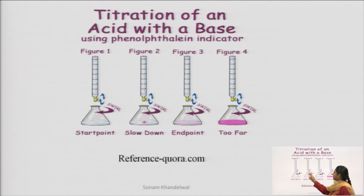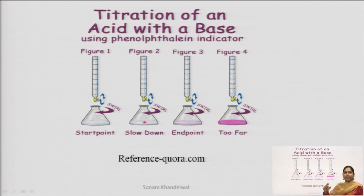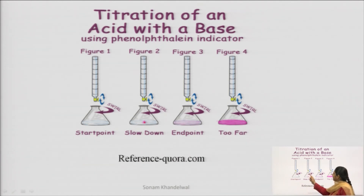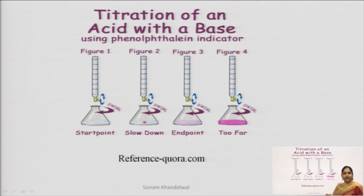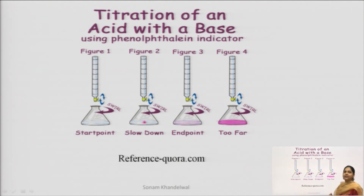When we do the titration, we start until we get a light pink colour. This pink colour is permanent — permanent means that when you rotate the conical flask with swirling movement, this pink colour will not go away. So what is your end point? When you start with pink colour but it disappears, we slow down and add titrant. This is our end point. If we exceed this colour, then we get a dark pink colour — that is too far. Our accurate end point is figure 3, when the colour is light pink.